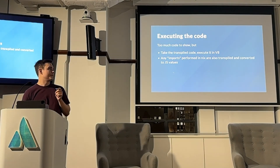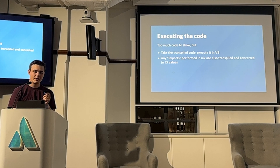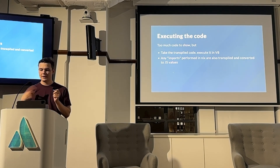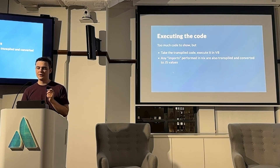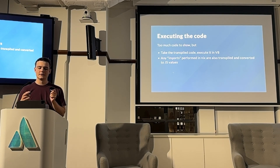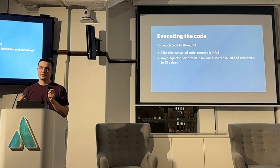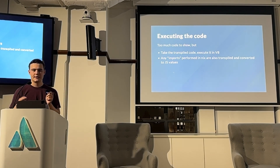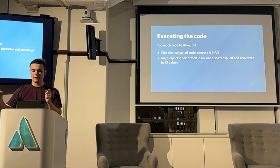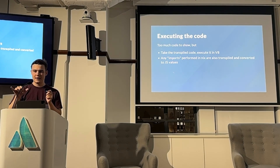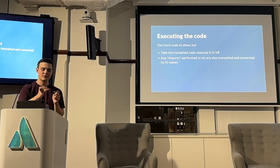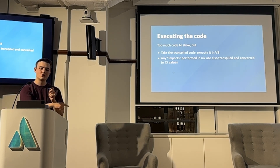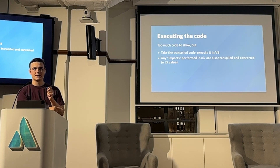Executing the code: I don't really have any code snippets to show here because it is a lot. But basically it transpiles the code to JavaScript, puts it into the V8 runtime. Any imports that the Nix code does get sent back to a Rust function, which then uses the path it provides to load the file, parse it again, convert it to JavaScript, execute the JavaScript, and return it back to the JavaScript runtime for the previous invocation.